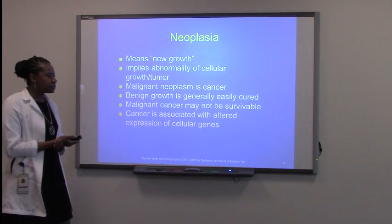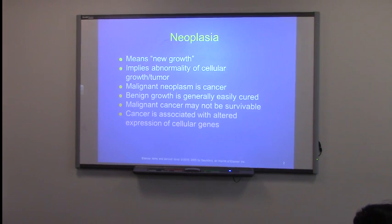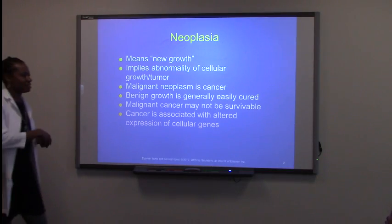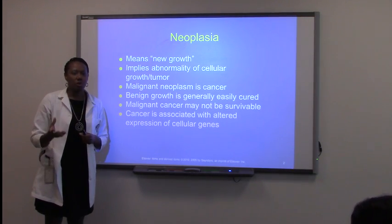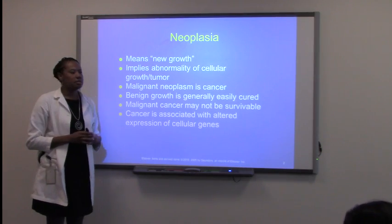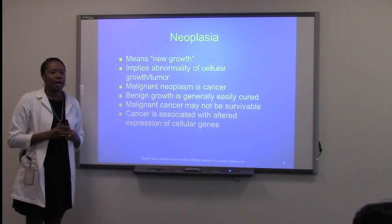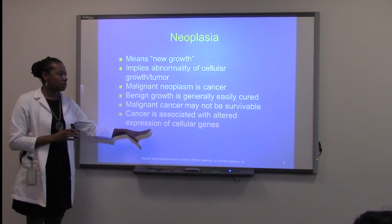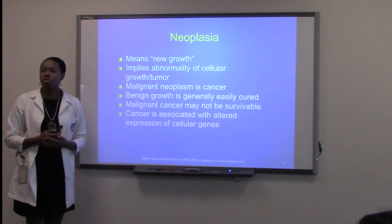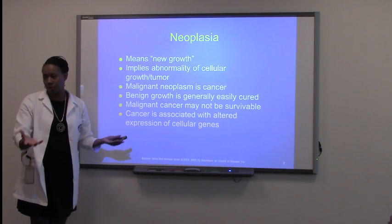Chapter seven covers neoplasia — neo meaning new, plasia meaning growth. Last chapter we looked at hyperplasia, meaning increased growth; neoplasia means new growth. This is an abnormal situation where there is abnormal growth with abnormal cells. Cancer cells come from what is considered an altered gene expression. Some scientists believe we all have a cancer cell inside of us — it's just a matter of whether that normal cell will have an altered gene expression and convert itself into a cancer.